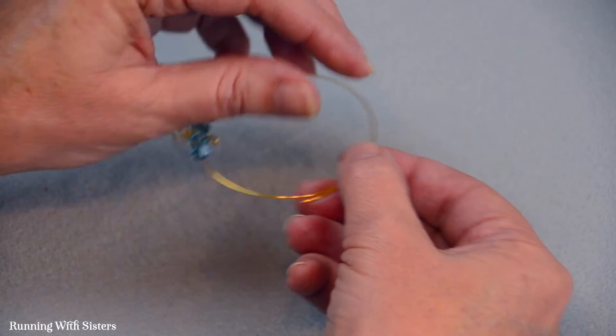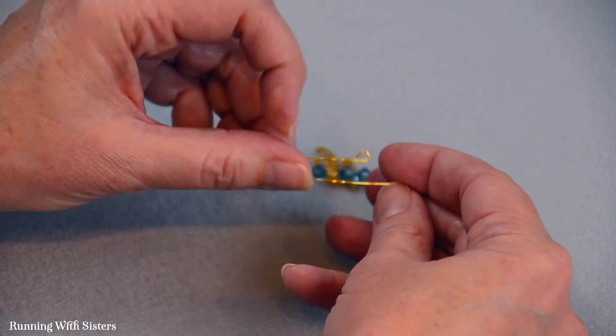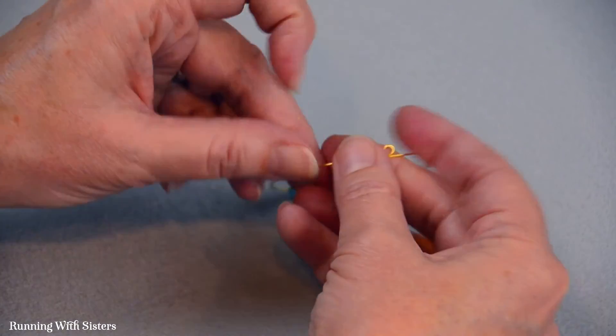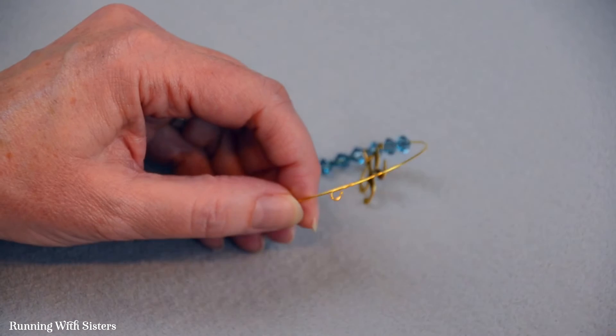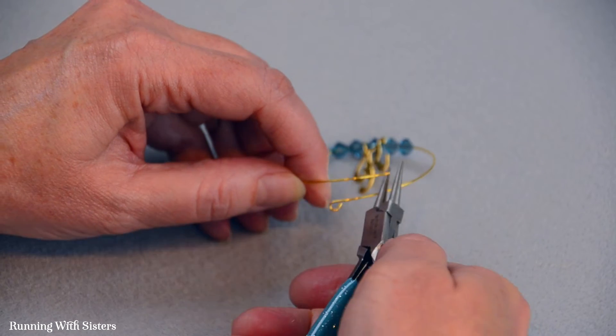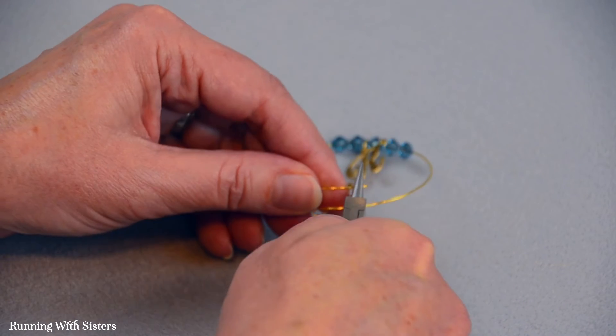And then the last thing we do is just put another loop at the end. So I go to the end that doesn't have the loop. I'll flip that over. I take the round nose pliers again, grab it at the very end.